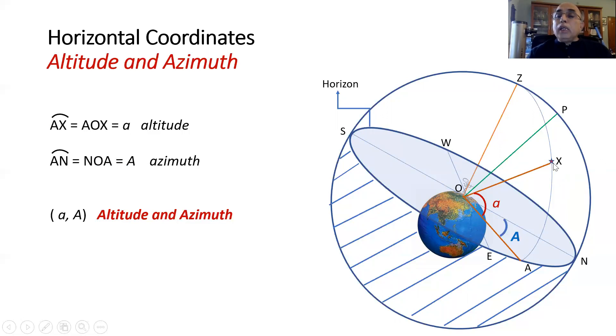If we need to give the coordinates of the star X, we draw a great circle from the zenith point Z via X and see where it meets the horizon, and the angle AOX is called the altitude, which is the angle above the horizon and is denoted by small a.